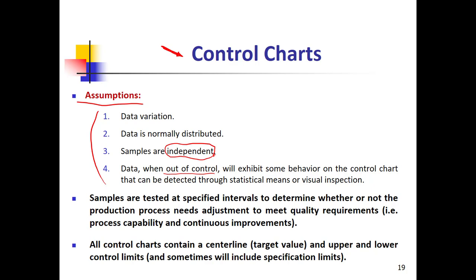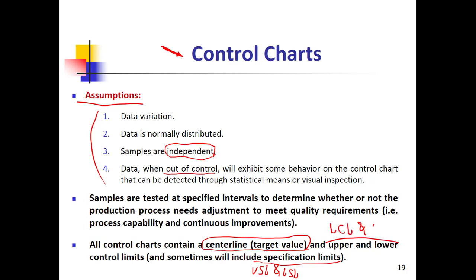All control charts contain a center line — which is my target value, the mean of my data that I want to have — and also upper and lower control limits. Sometimes we can also include the specification limits: USL and LSL. But it always has upper control limit (UCL) and lower control limit (LCL).